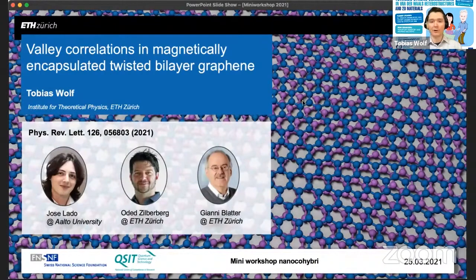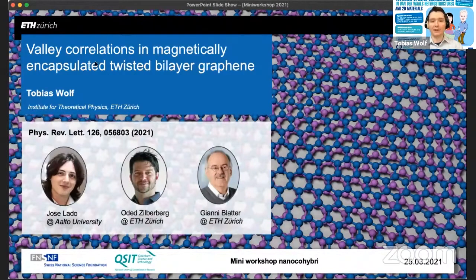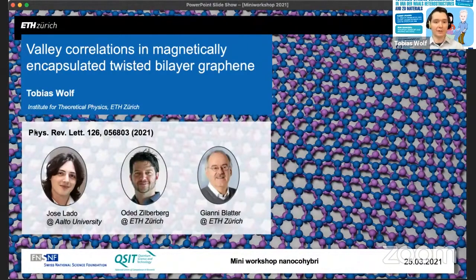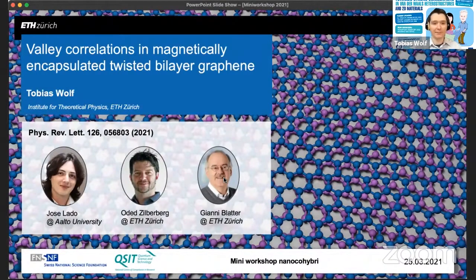I will also be talking about twisted bilayer graphene, as people before me did, and I will introduce a new idea, namely that encapsulation with magnetic materials can promote valley correlations. This is based on a recent work that I did in collaboration with Jose Lado, Rudolf Sebaubach and Johnny Blatter towards the end of my PhD studies.